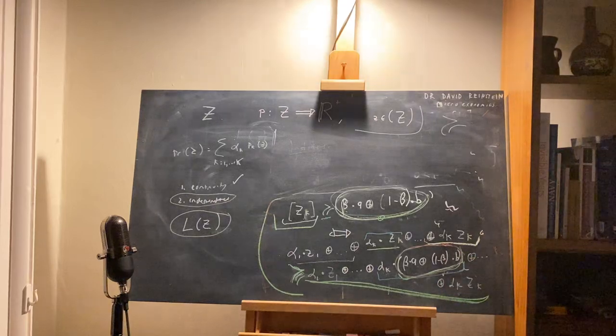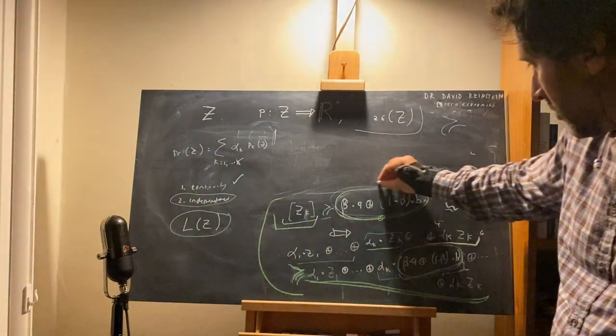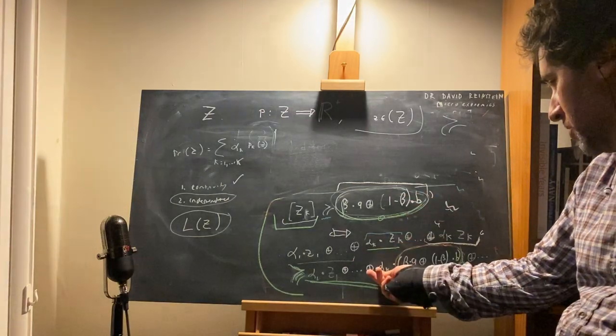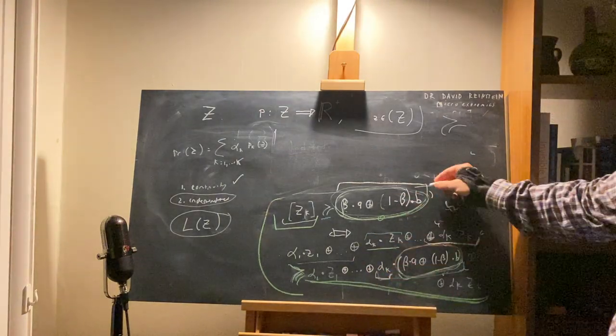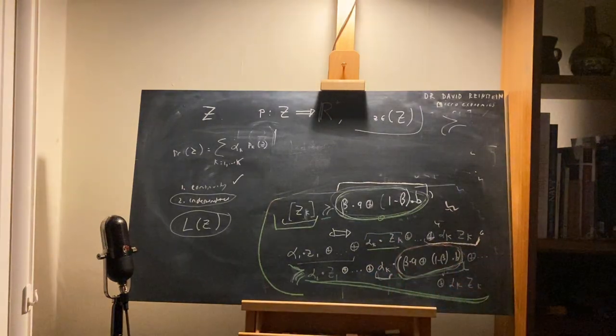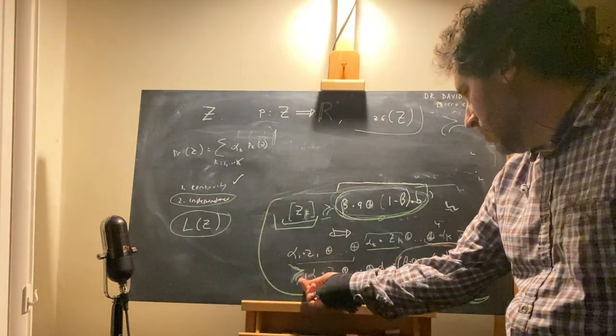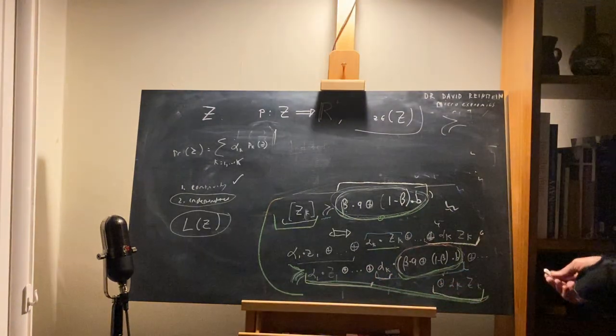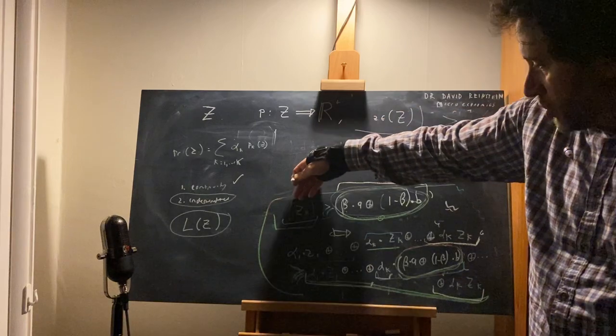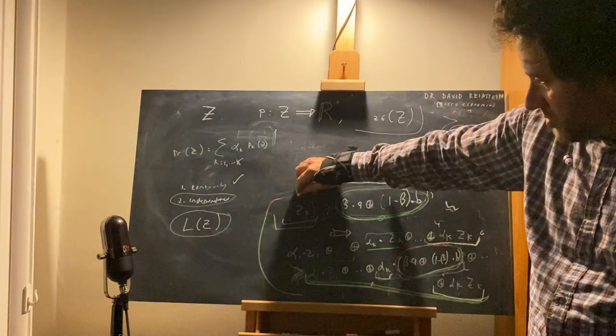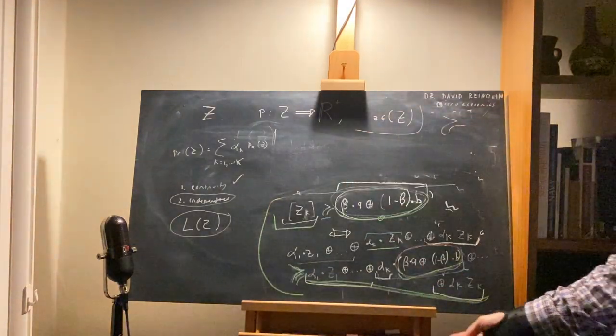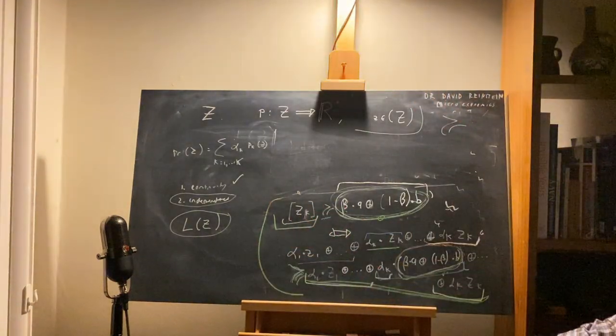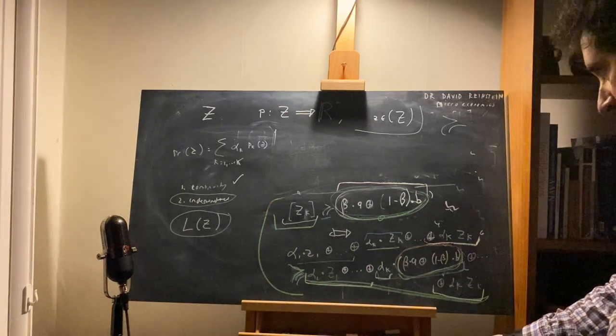of the world. And what have I done to the thing on the right, to this lottery? Well, I've shrunk down its probability by alpha k—rather than having this lottery, I have alpha k probability of this lottery—and I've added all these things that happen in the other states of the world. So in each case I've multiplied it by a probability and added a bunch of stuff that happens in all the other states of the world, and that's the same stuff in both cases. We've multiplied both